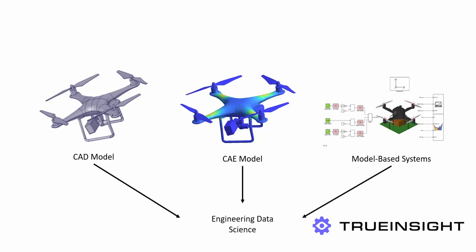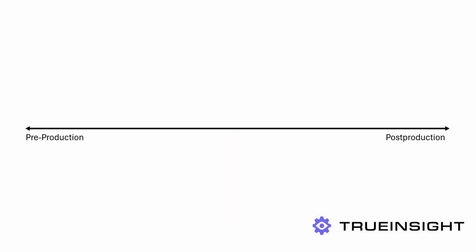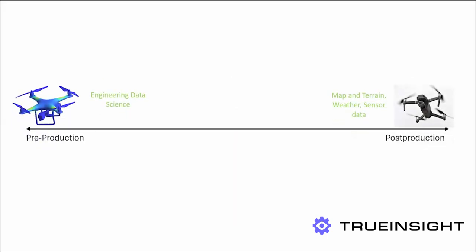When you combine many of these tools together, you get a complete framework for your engineering processes that happens prior to going into mass production. Now let's also look at what digital information comes from the post-production end of the process as well.